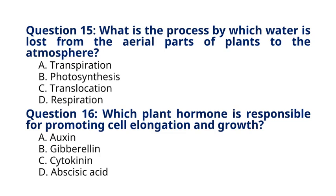Explanation: Auxin is a plant hormone that promotes cell elongation, root formation, and tropic responses in plants.